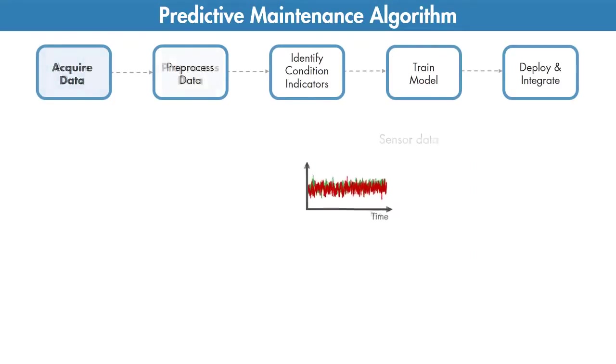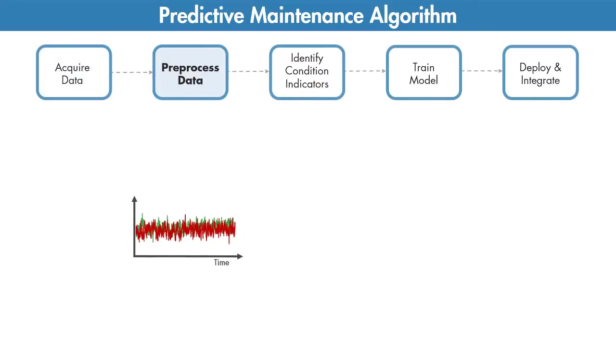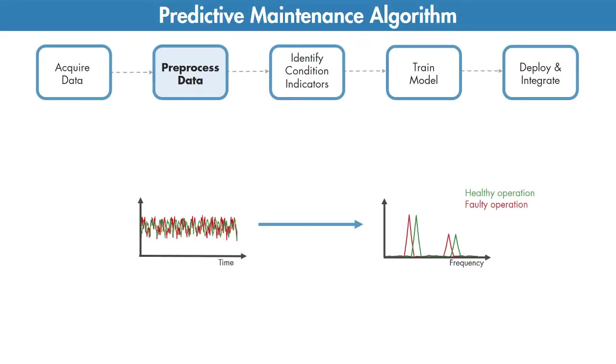Once you have the data, the next step is to remove the outliers and clean it up by filtering out the noise. Sometimes further preprocessing is necessary to reveal additional information that may not be apparent in the original form of the data. For example, converting time domain data to frequency domain may help us extract some useful features also referred to as condition indicators.